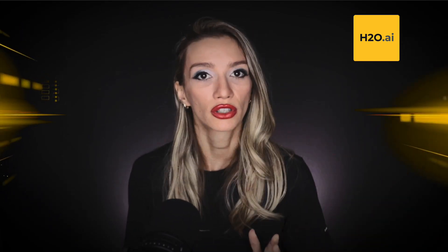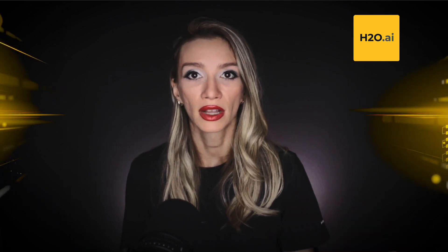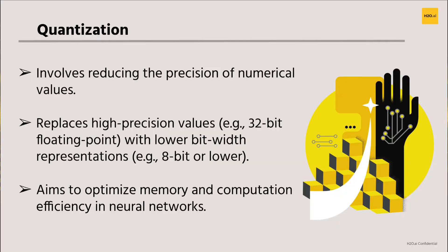Quantization, in the context of deep learning neural networks, is a technique used to reduce the precision of numerical values, typically weights and activations in a model. In essence, it involves representing numerical values with a smaller number of bits than their original high-precision counterparts — for example, instead of using 32-bit floating point numbers, you might use only 8-bit or even lower bit-width representations.